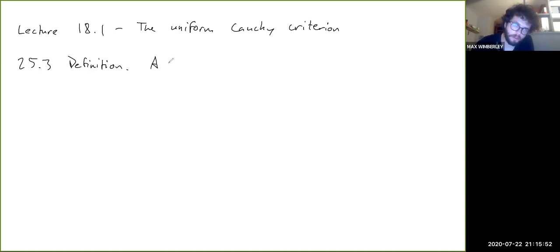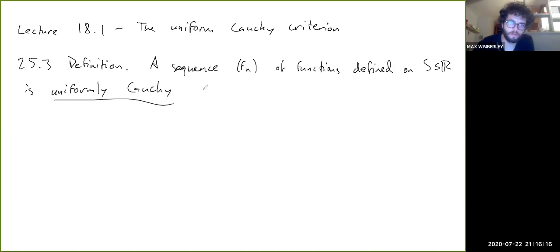So a sequence fn of functions defined on S in R is uniformly Cauchy on S. Don't want to forget that 'on S', because you can have a sequence of functions defined on some large set, and then if you restrict your attention to a certain subset, it might be that the sequence on the whole set is not uniformly Cauchy, but if you restrict to a much smaller subset, maybe the sequence does become uniformly Cauchy just on that subset. So it can depend on the set that you're looking at.